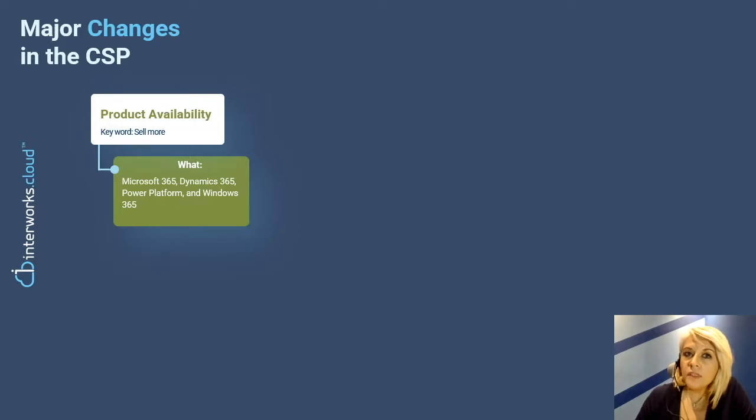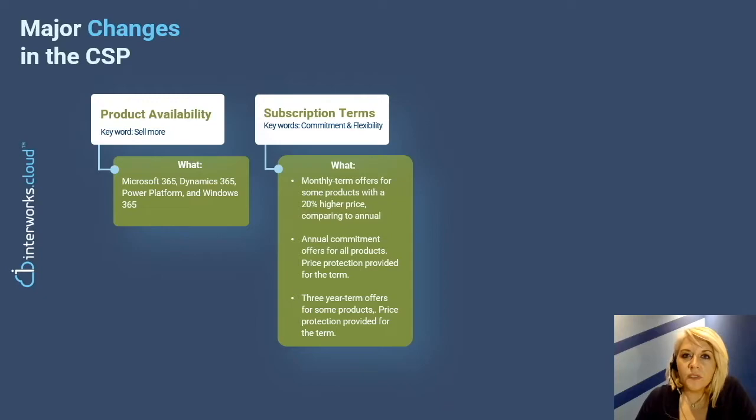First of all, new products are available to the CSP while legacy ones come with a new face. Microsoft 365, Dynamics 365, Power Platform, and Windows 365 are the new NCE offerings for you. But how about terms? Microsoft is willing to enhance customers' commitment, but also offer more flexibility to partners and customers who do not want to commit. Monthly term offers and annual term offers will become available for all products, while triennial ones will become available for some products.